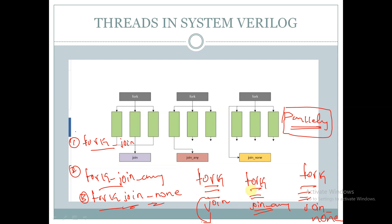In fork-join-any, if there are three statements declared in the fork-join-any thread, and if any one of these three statements executes before the other two — for example, if statement one executes before statements two and three, or if statement three executes before one and two — then the compiler will come out of the fork-join-any. So whichever statement executes first, the compiler will exit that thread.